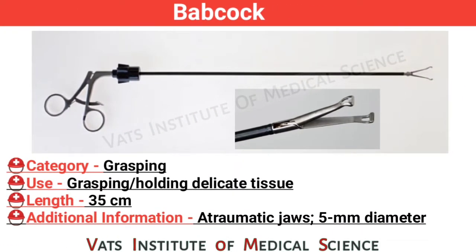Babcock. Category: grasping. Use: grasping or holding delicate tissue. Length: 35 cm. Additional information: atraumatic jaw, 5 mm diameter.